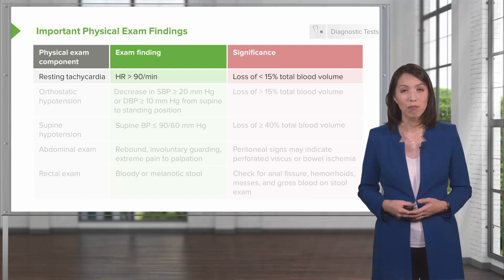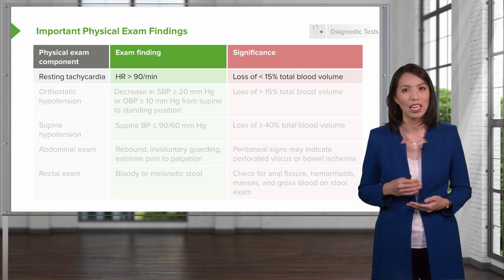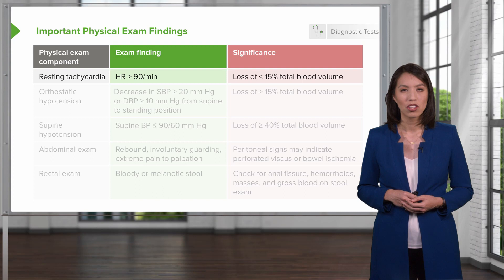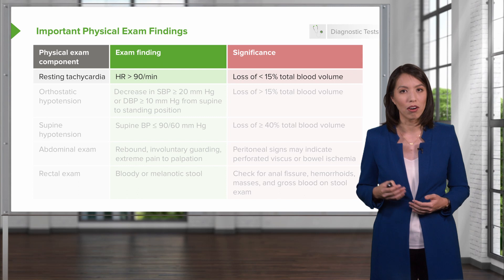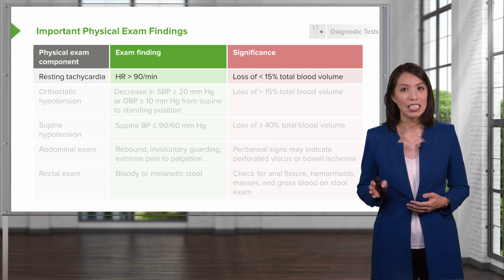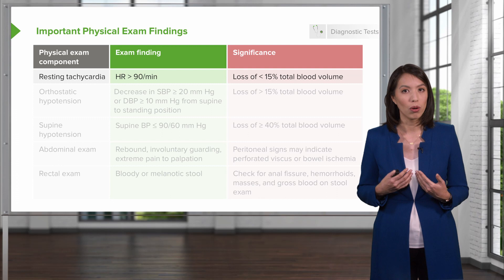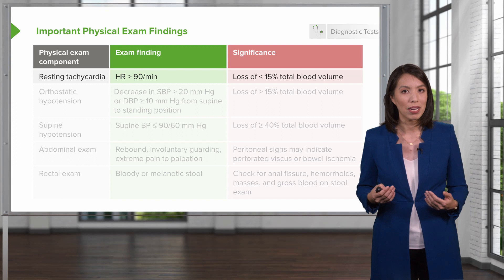On physical exam, certain findings help stratify how sick the patient is. Resting tachycardia — a heart rate greater than 90 at rest — implies the patient has already lost about 15% of their total blood volume. However, if the patient is taking a beta blocker or calcium channel blocker, this finding may not be present and you might be falsely reassured.